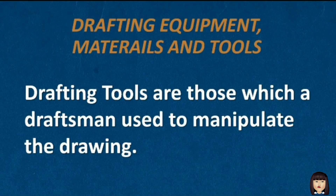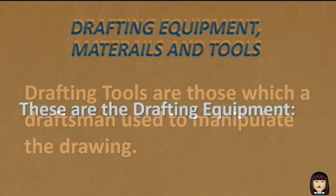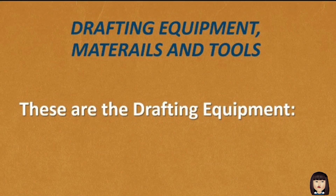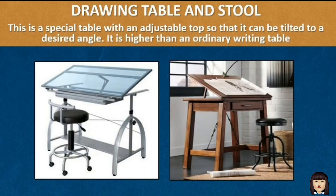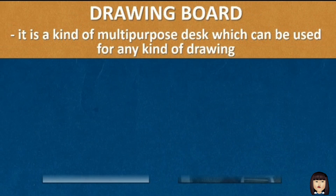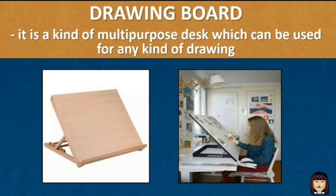Drafting tools are those which a draftsman uses to manipulate the drawing. These are the drafting equipment. The drawing table and stool — this is a special table with an adjustable top so that it can be tilted to a desired angle. It is higher than an ordinary writing table. The drawing board is a kind of multi-purpose desk which can be used for any kind of drawing.